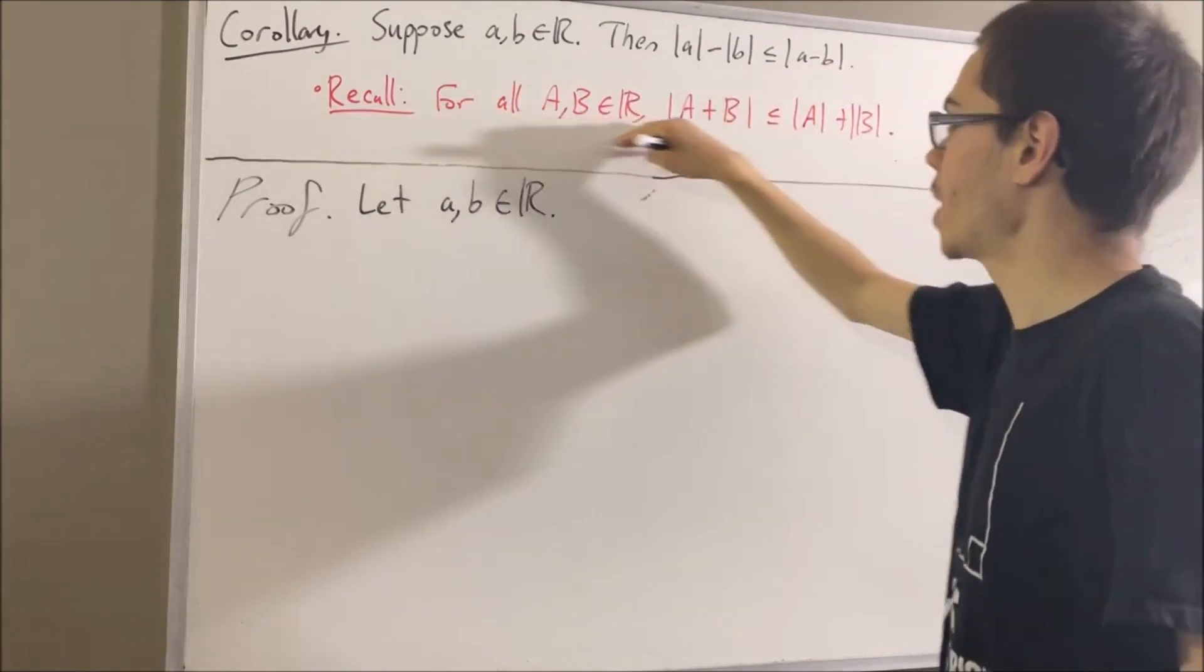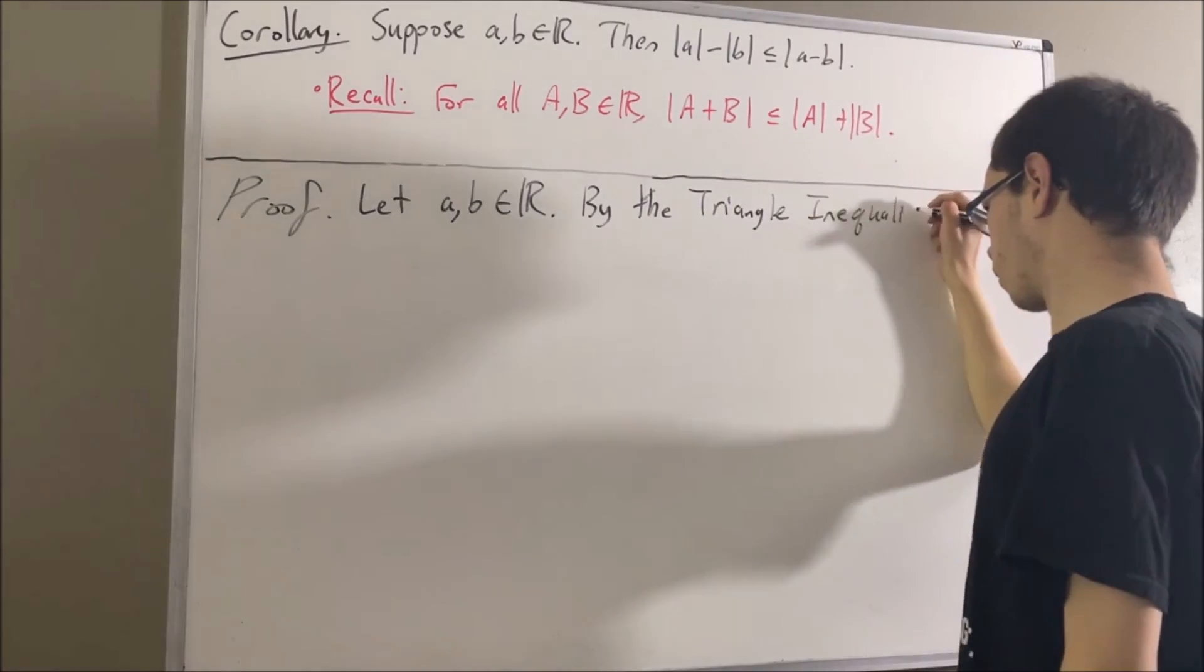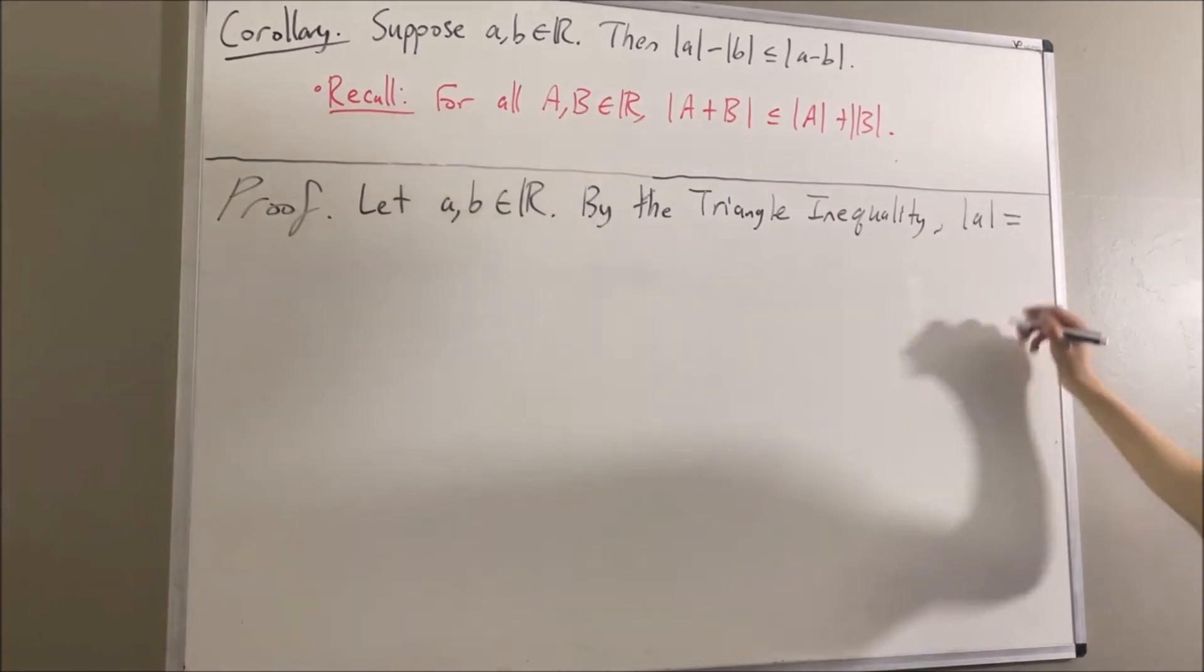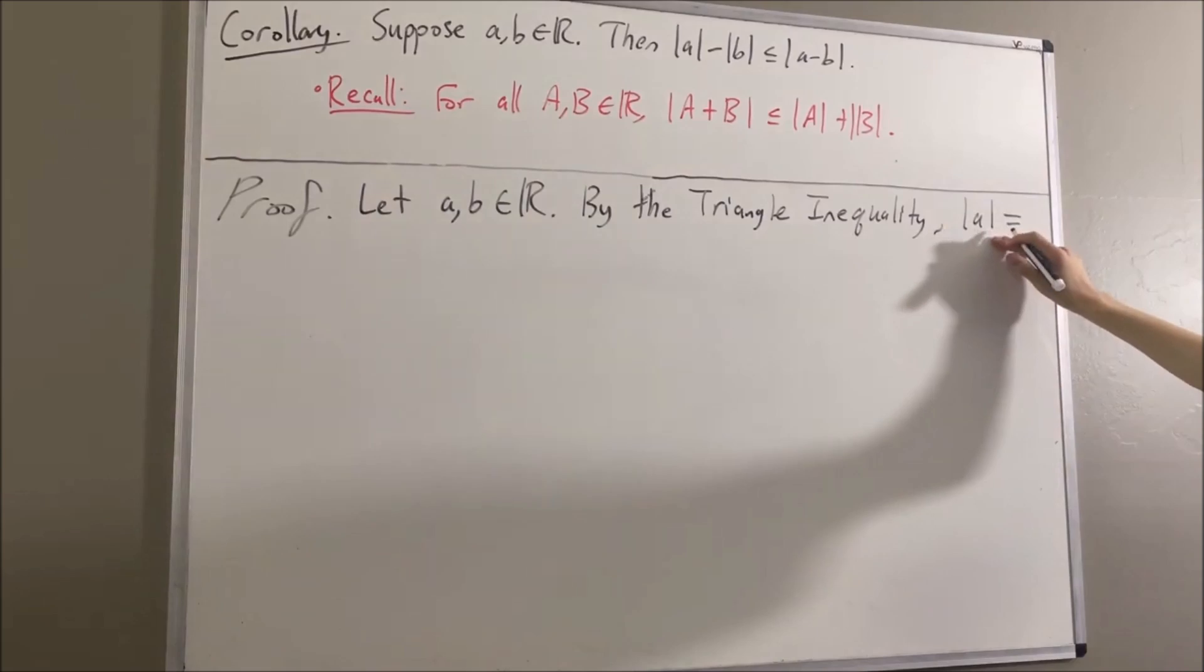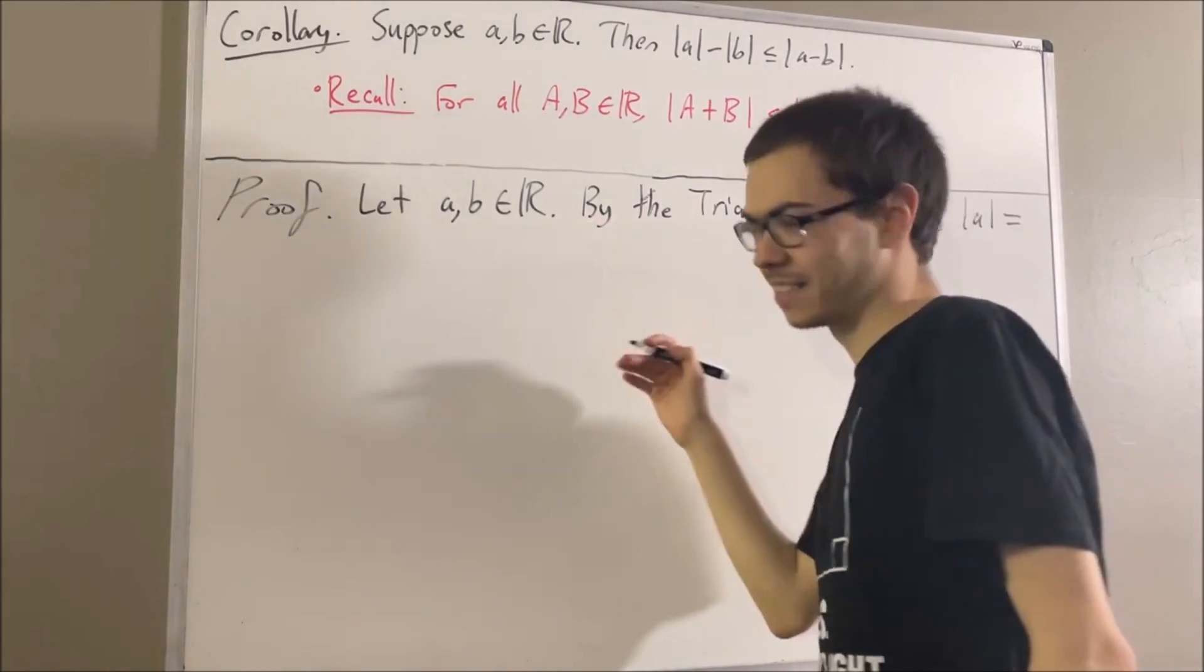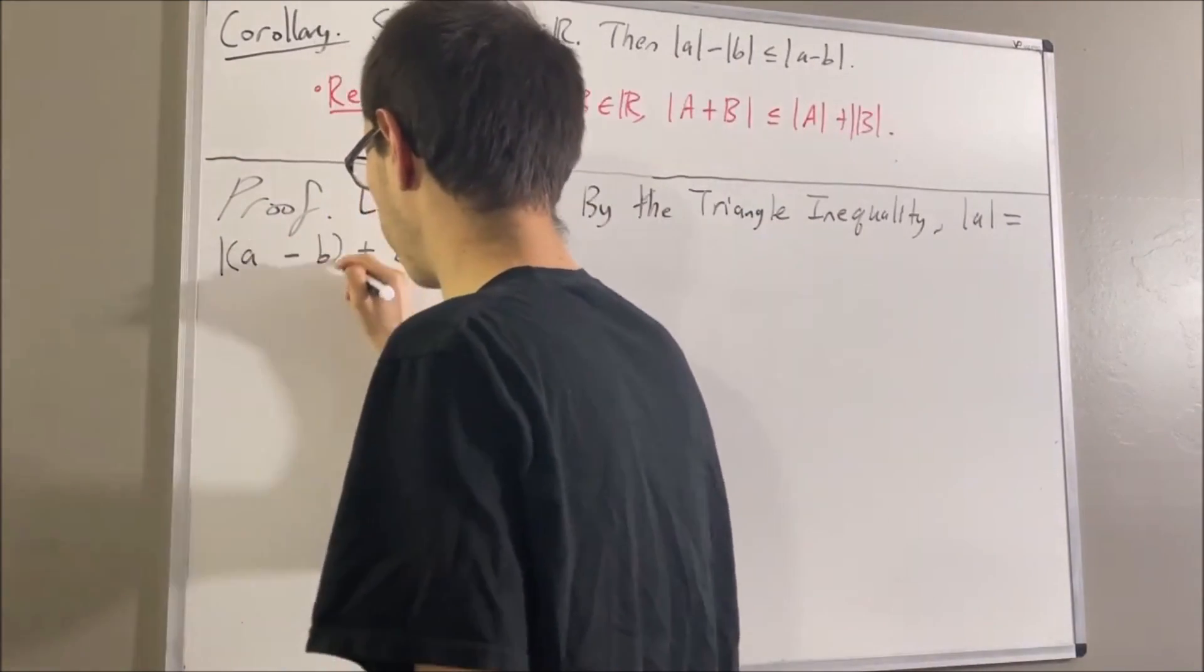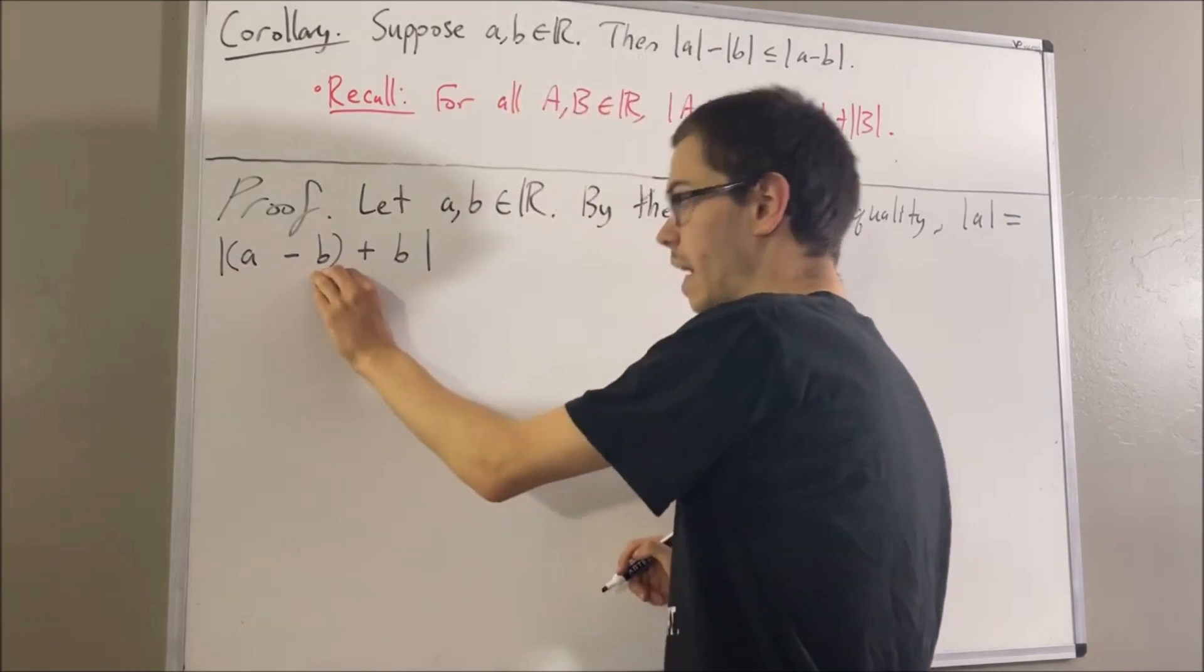Now, to see how we can apply the triangle inequality, check this out. The absolute value of A is the same thing as the absolute value of A minus B plus B. Let me emphasize that we have A minus B and B.